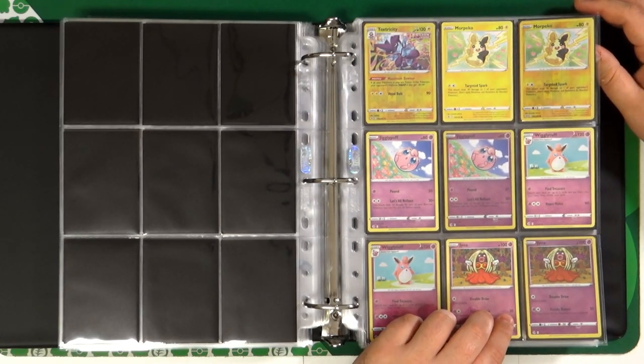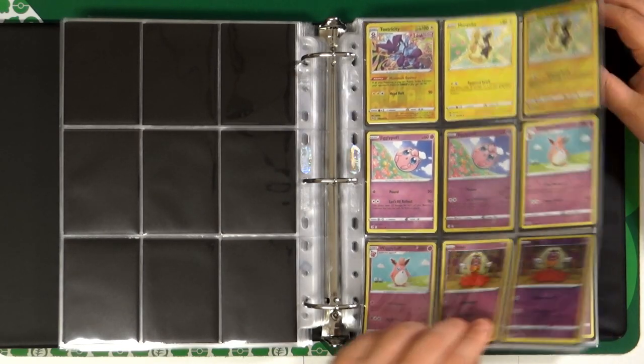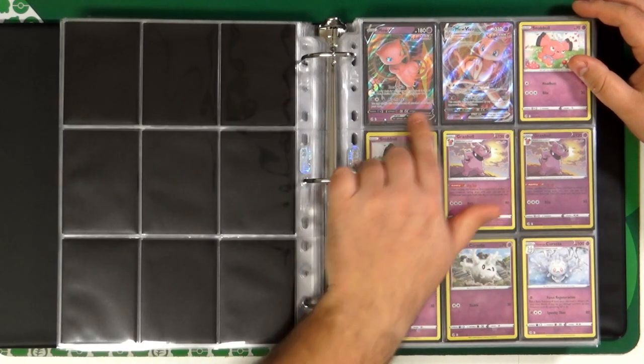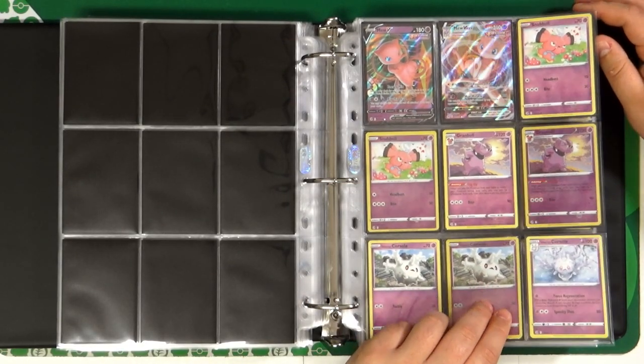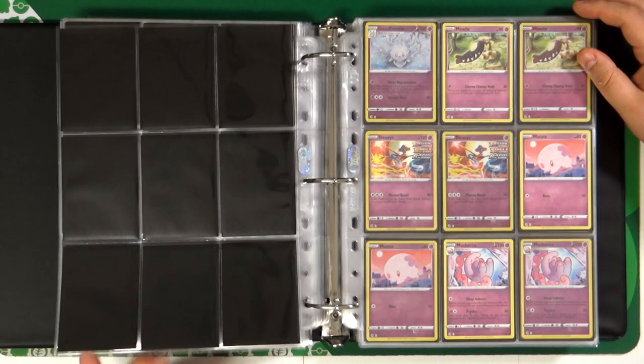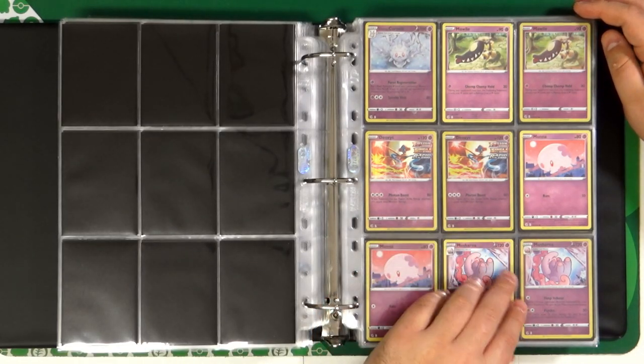Jigglypuff, Wigglytuff, Crochet Style. The star of the set, Mew, V and VMAX. Malamar and Deoxys.